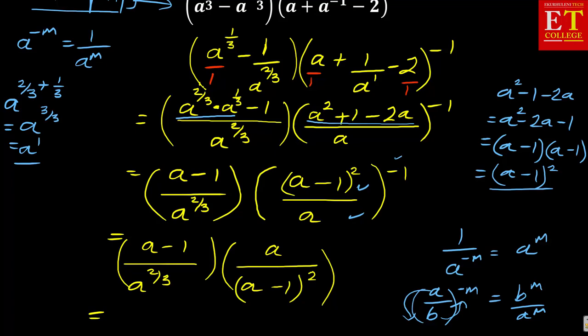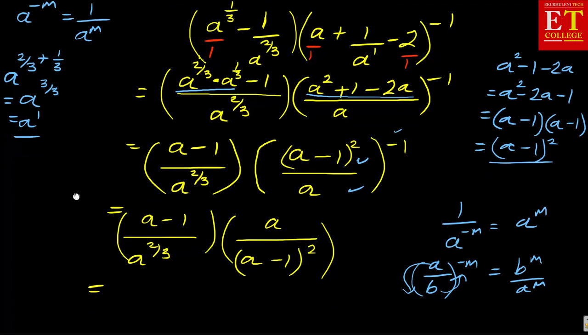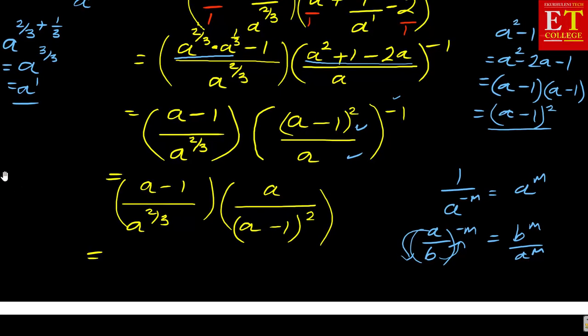This one will become a over a minus 1 squared. The a minus 1 will cancel one of them so that you've got one there. What you're going to have is a all over a to the power 2 over 3 multiplying a minus 1.